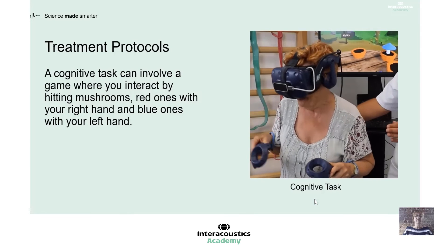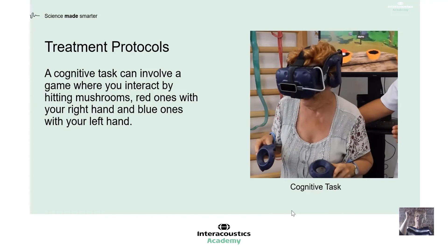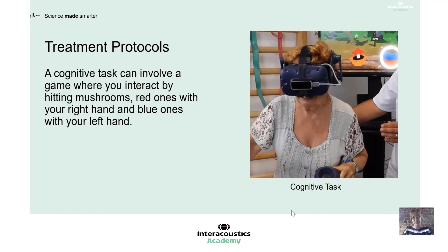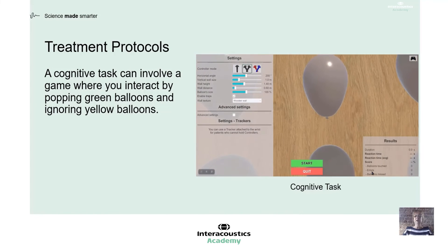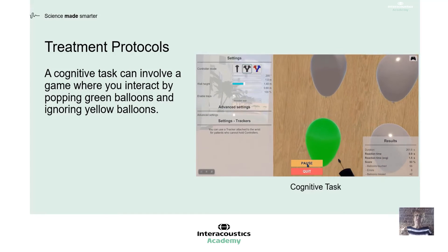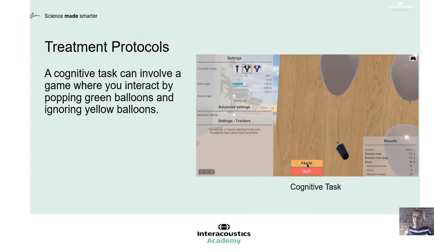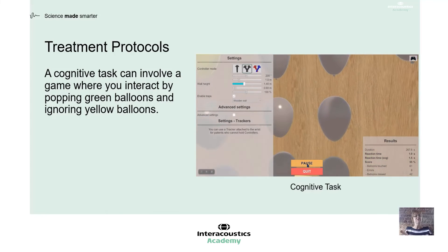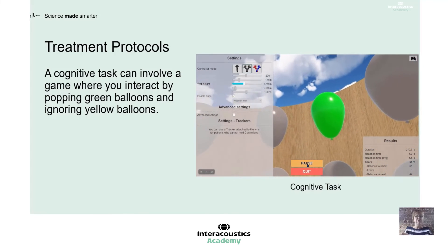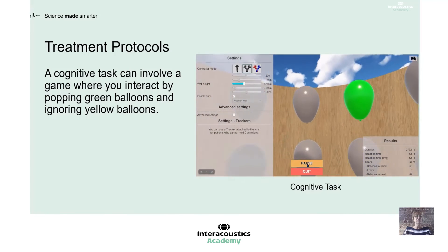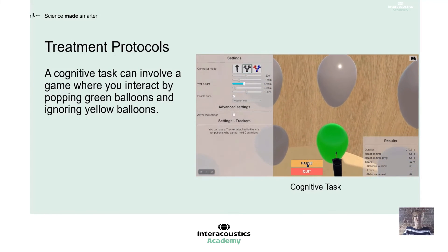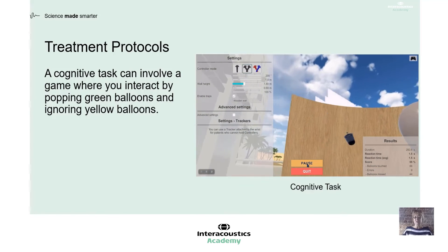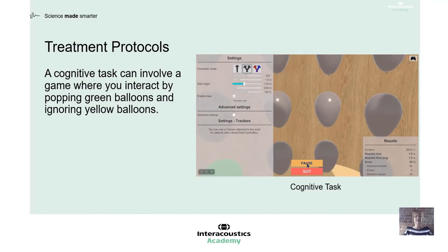Here you can see a woman doing a cognitive task — with her right hand she has to hit red mushrooms, and with her left hand she has to hit blue mushrooms, which can be a little challenging. And here is another example where we're popping balloons. In this task, they have to pop the green balloons but not pop the yellow balloons. That cognitive task reminds me of saccadometry assessment, where we tell the patient not to look at the target but to look away. These cognitive tasks add that challenge, trying to dig out the difficulties that are hidden behind easier tasks.